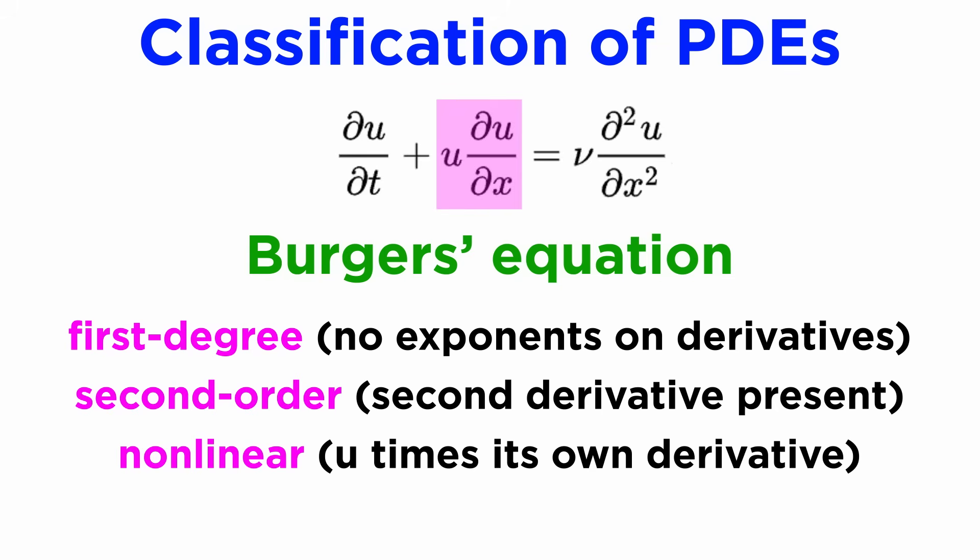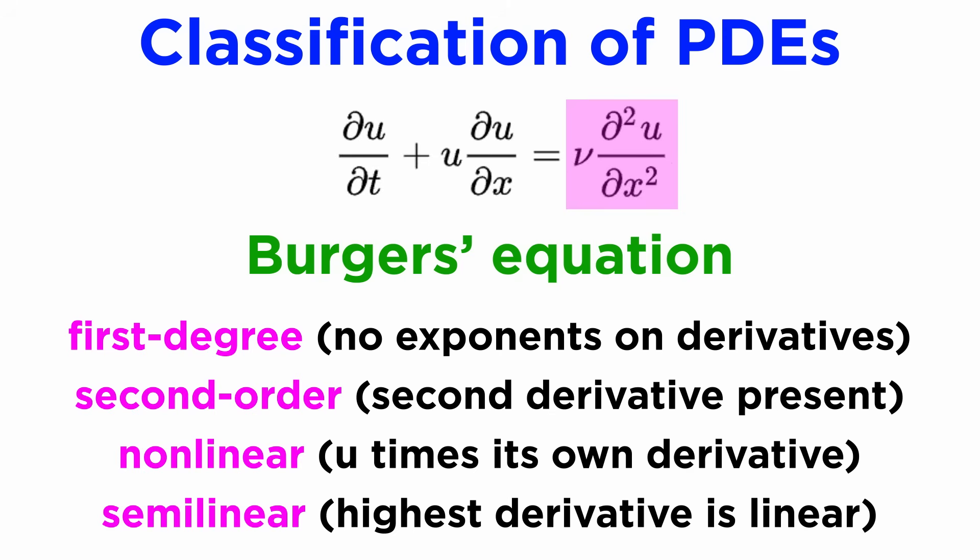and it's also nonlinear because the middle term has a product of the dependent variable U with its derivative, but more specifically, it is semi-linear because the second derivative term is on its own, while the first derivative contains the nonlinearity.